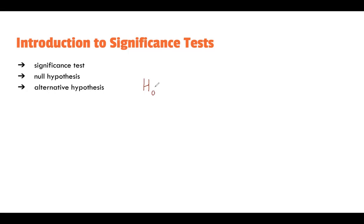Usually your scenario will be something like: the school used to have a 60% pass rate for a certain class, and three years later they want to see if it's improved because of new textbooks. The null hypothesis would say that the proportion is equal to 0.6. Your alternative hypothesis — HA — is basically what you think or suspect will happen. Since we want to see if it increases, the alternative hypothesis would be P is greater than 0.6.